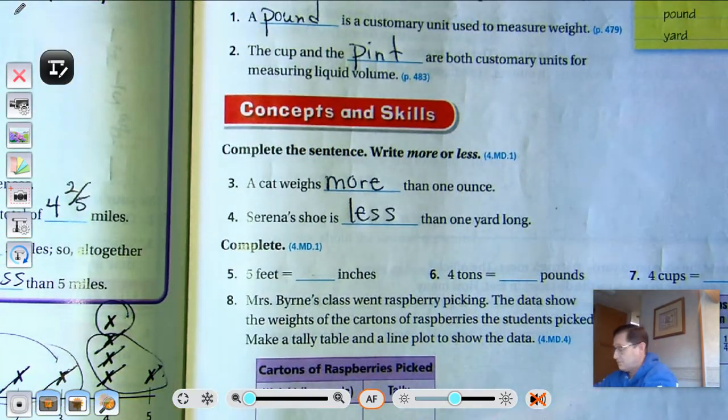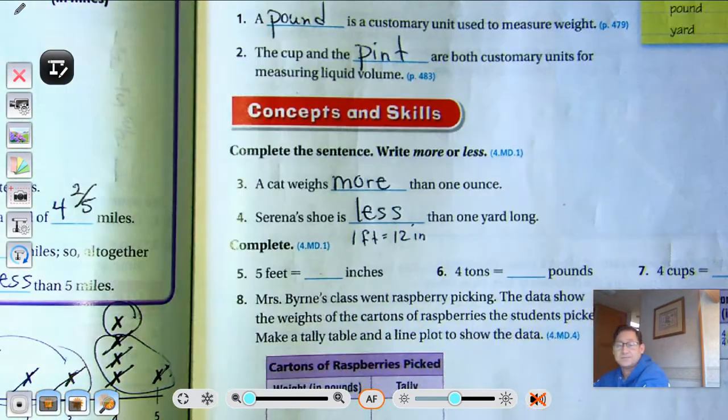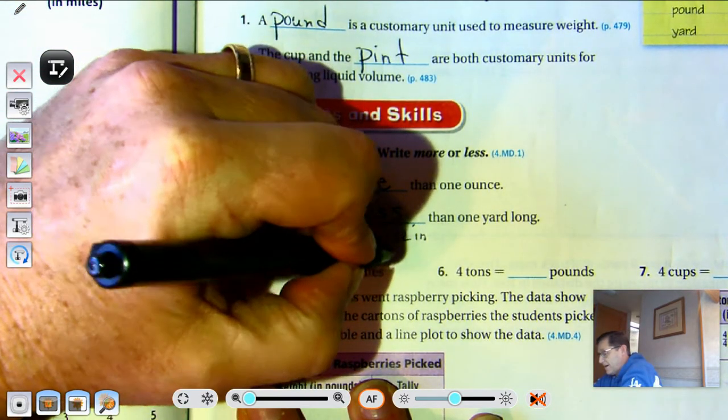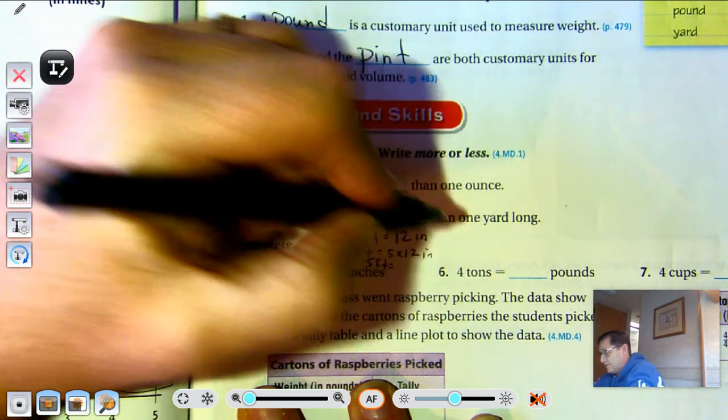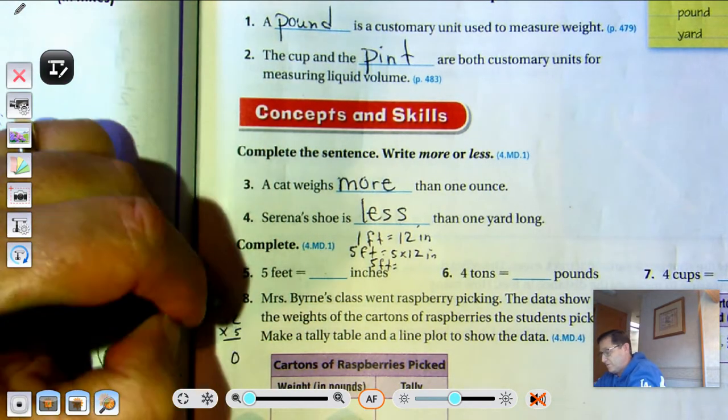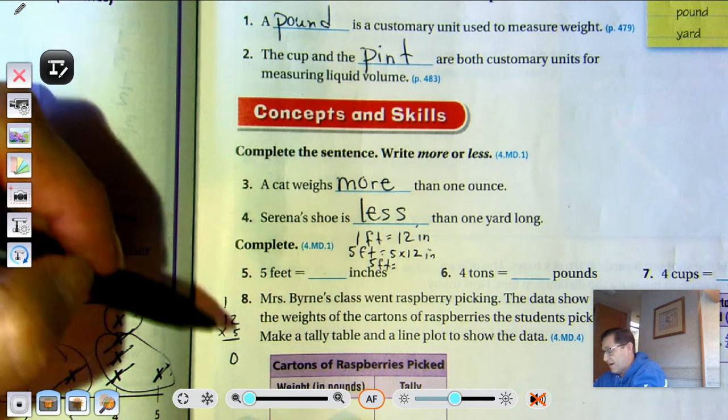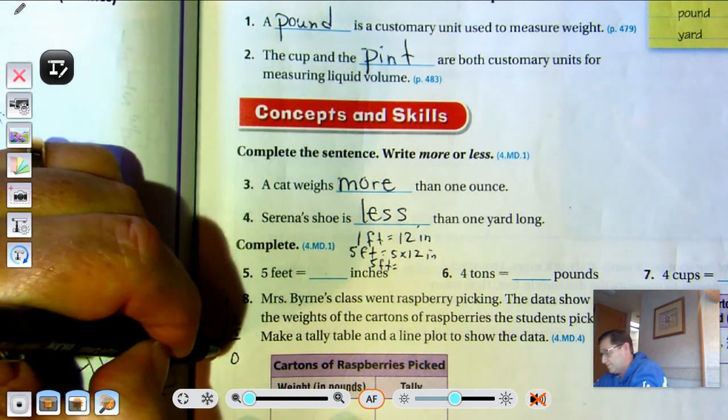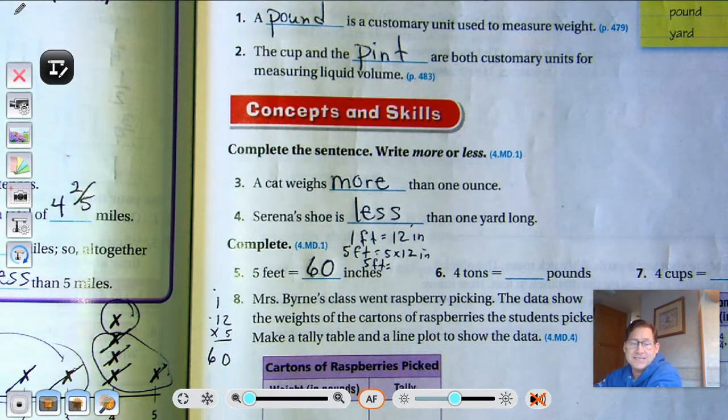Five feet is how many inches? Well, we should know that one foot is 12 inches. So five feet is five times 12 inches. Five times two is ten, regroup as one ten and zero ones. Five times one ten is five plus one regrouped is six. So 60 inches.